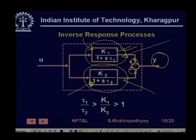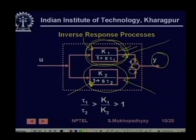This is why it is called an inverse response process: because the response to an input initially you see in an opposite fashion, and finally you see it in another fashion. If you design a controller for this process, then for the initial time scales this inverse response will actually confuse the controller and might cause instability — this is the main problem.